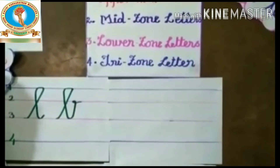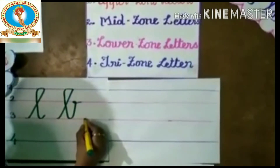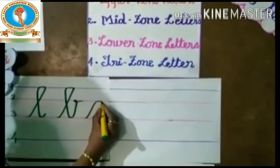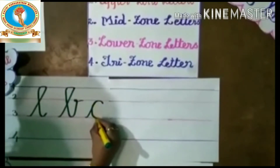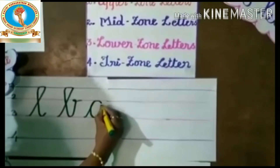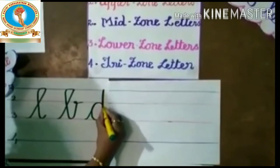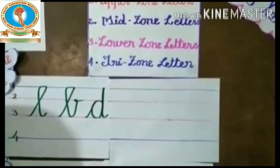The next letter is D. Put a C shape, then close it. Go up, come down, and a small curve. D.